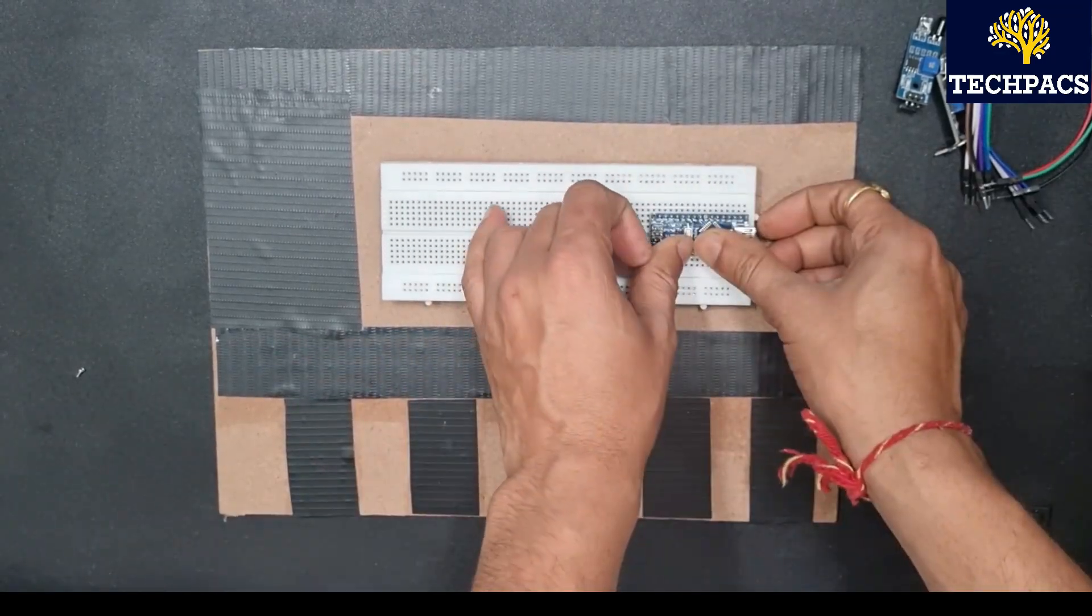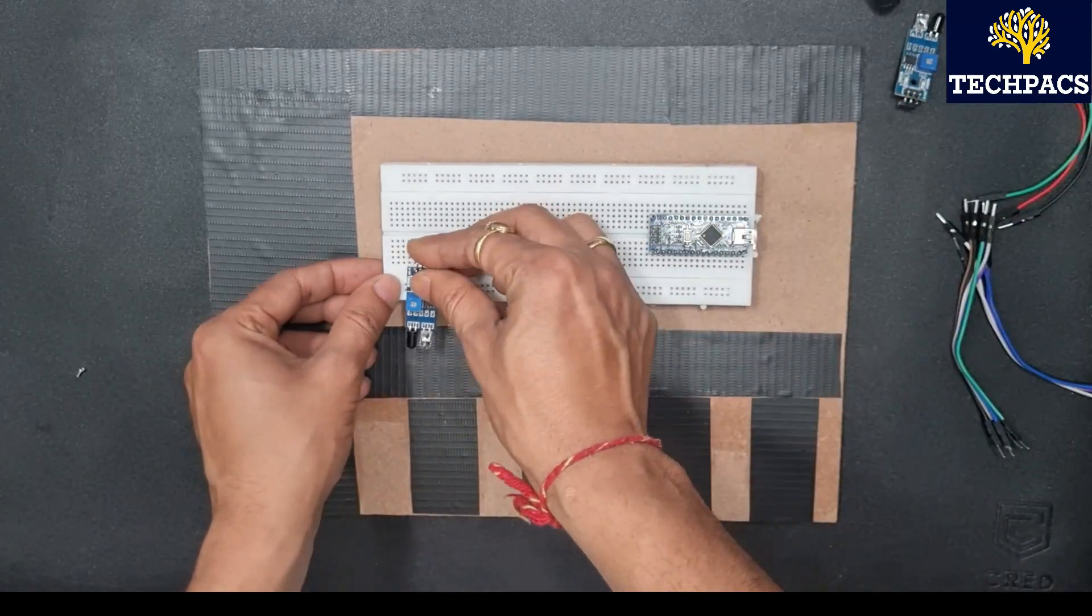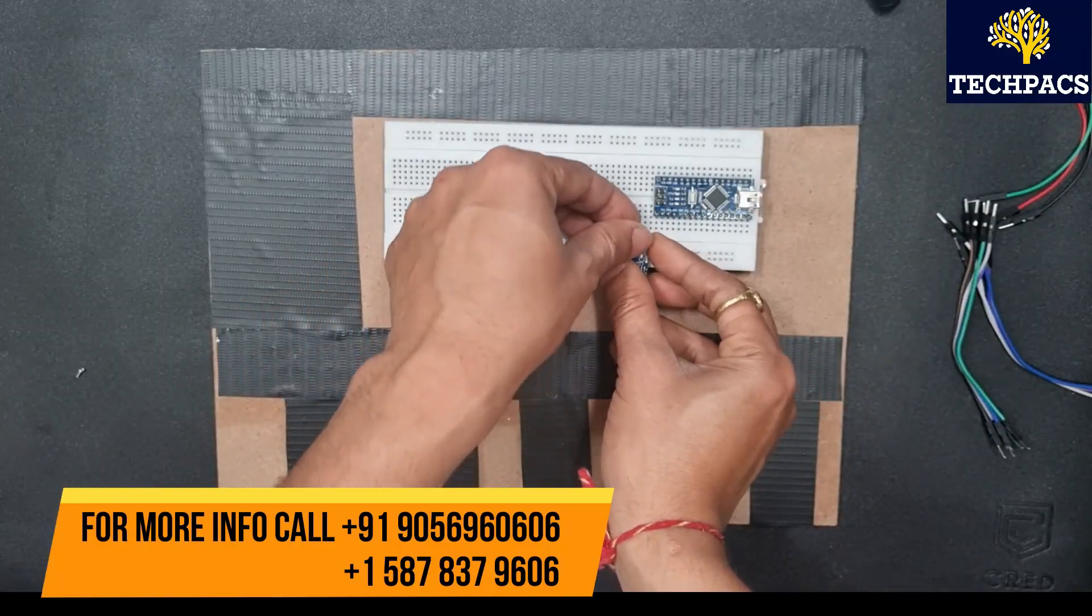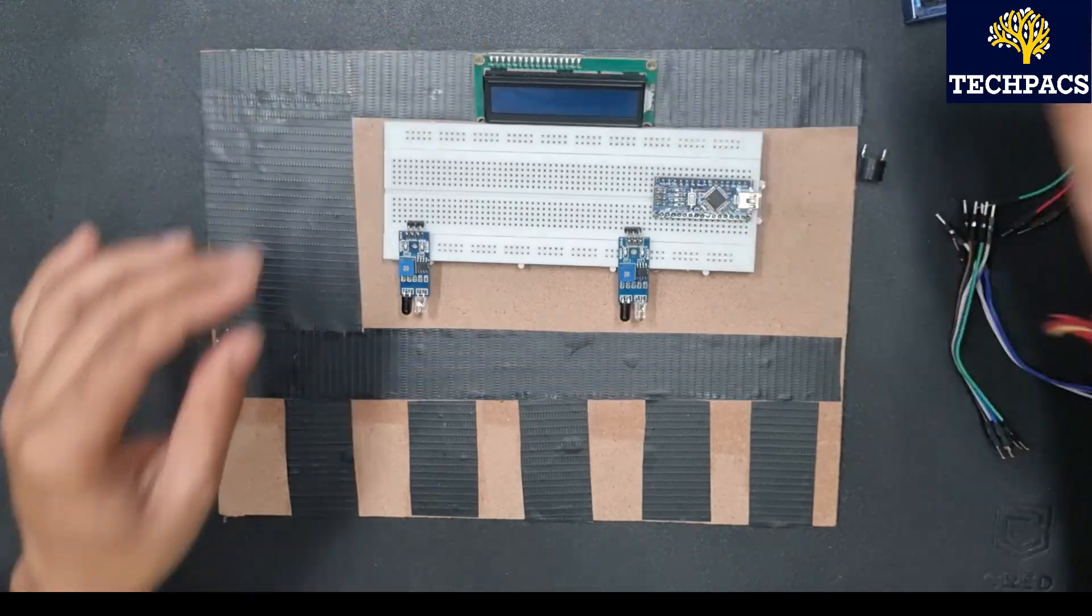Here I have fixed it on the breadboard. Next I'll take an IR reflector sensor, here the second sensor, and now I'll place the LCD over here.